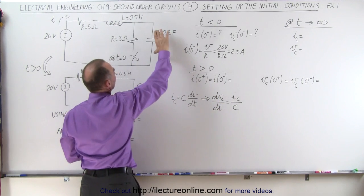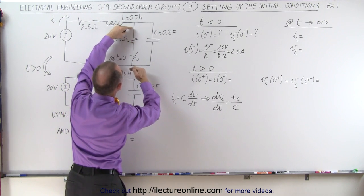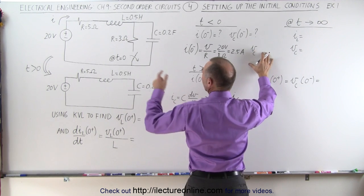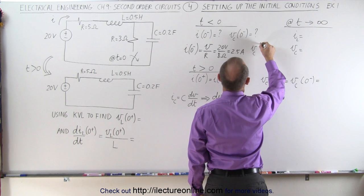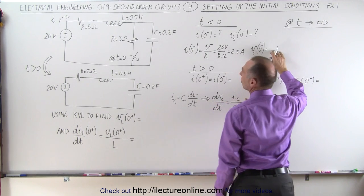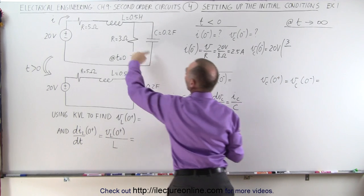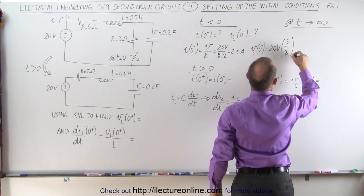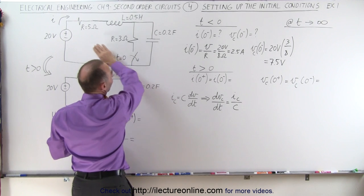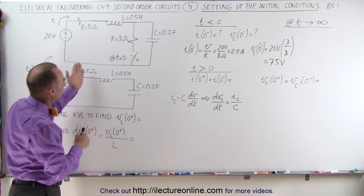The voltage across the capacitor — we want to know the voltage from there to there — means we need to find the voltage relative to the drop across both resistors. The circuit acts like a voltage divider. The voltage across the capacitor at t = 0⁻, right before the switch opens, is going to be 20 volts times the 3 ohm resistor divided by the total resistance of 8 ohms — so 3/8 of 20 volts — which equals 7.5 volts. Before the switch opens: current = 2.5 amps and capacitor voltage = 7.5 volts.